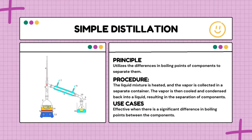Looking at the procedure, it all starts with the heating stage. The liquid mixture is gently heated, giving it thermal energy. As the mixture is heated, the component with the lowest boiling point turns into vapor. In a separate container, the vapor is cooled down — this cooling process is crucial because it transforms the vapor back into a liquid. The cooling and condensation results in the isolation of the individual components, since each component has its unique boiling point and transforms back into liquid at different temperatures.